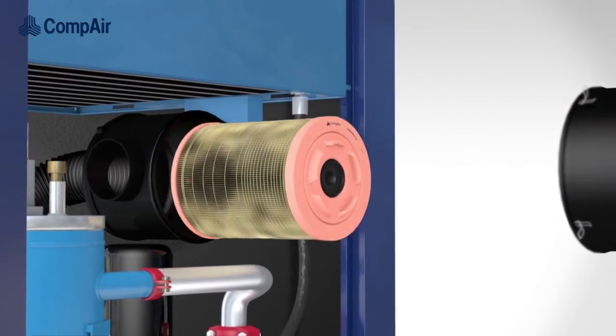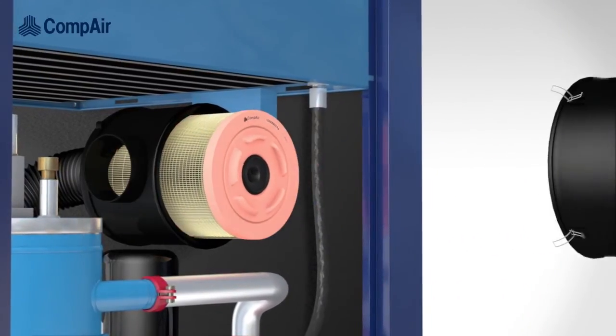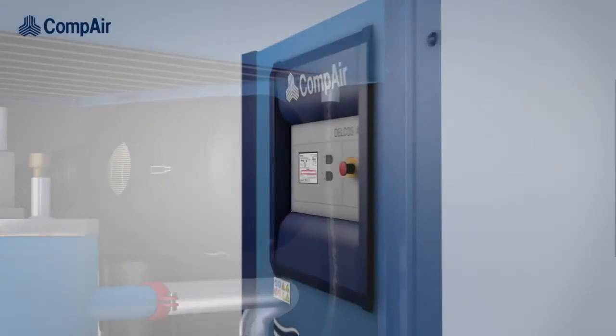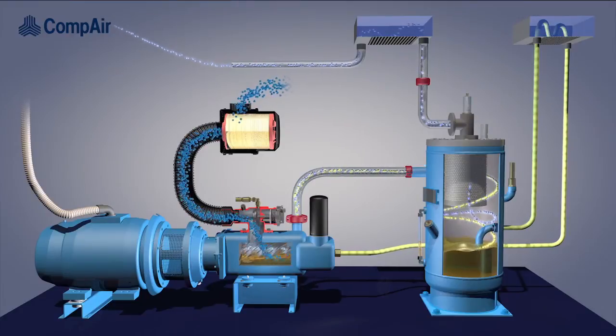CompAir filter elements are always made of high quality materials but even they have to be changed from time to time. A differential pressure indicator triggers a warning on the compressor display. Now let's go back to the filter system.